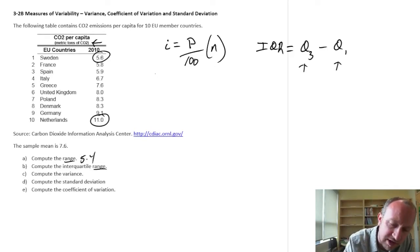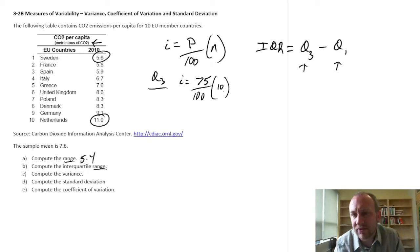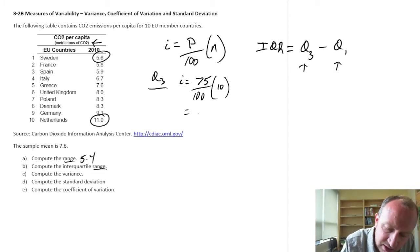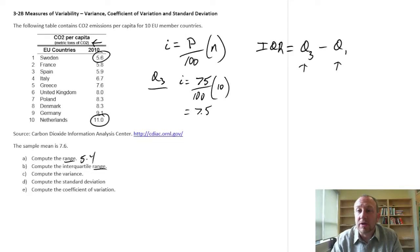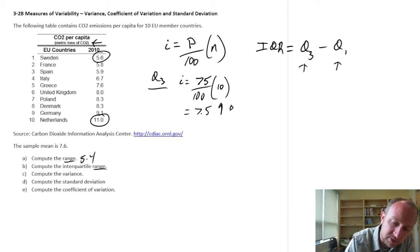Let's start with Q3, the third quartile. The index value that corresponds to that would be the 75th percentile times our sample size here is 10. So 0.75 times 10, this is going to equal 7.5. When we have a non-integer response, we round it up. So this would round up to 8, so we're looking at the 8th observation, which in this data set is 8.3.